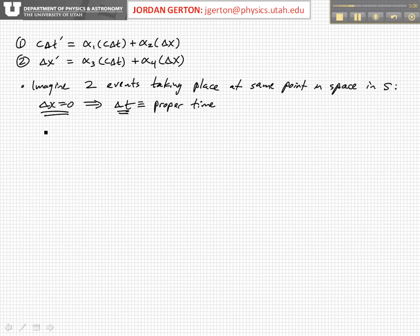And so if we know that, then the time measured in the primed frame, in a moving frame, is going to be time dilated. So it's going to be time dilated by the factor gamma. And if we compare that with equation one up here, then what we conclude is that alpha one is equal to gamma, the Lorentz factor.